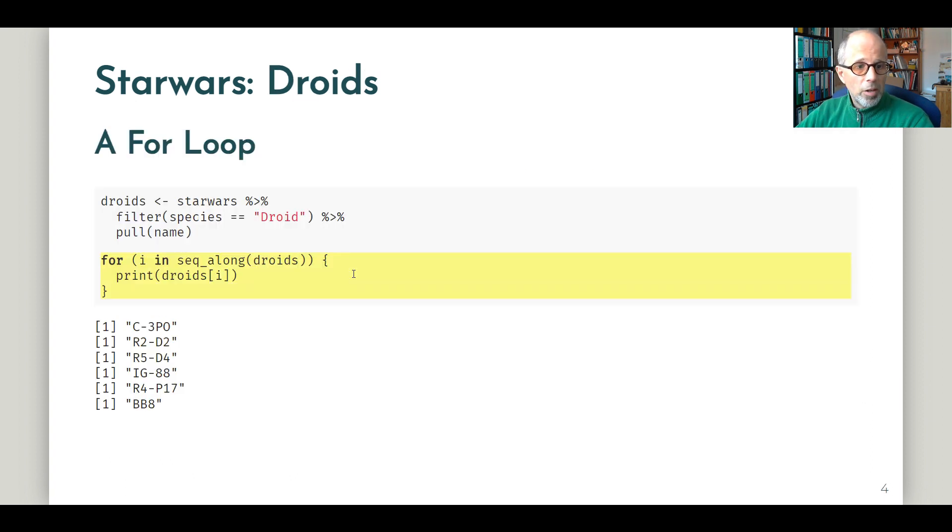We start out by writing a for loop. First, I filter the dataset for the droids, then I'm using the pull function from the dplyr package, which gives me a simple vector instead of a data frame. Then I'm writing a for loop to loop along this vector of droids and print the names of these six droids.